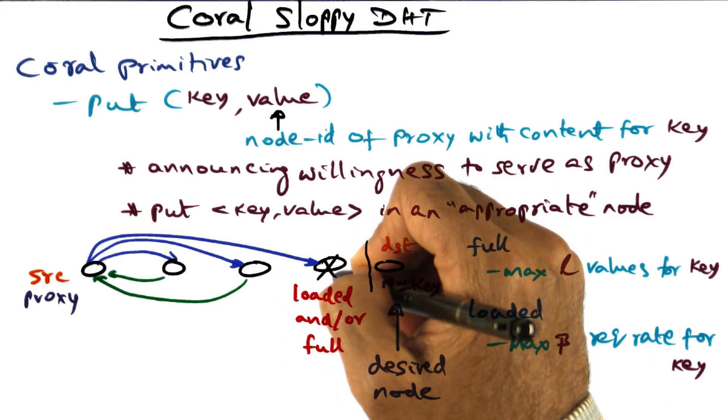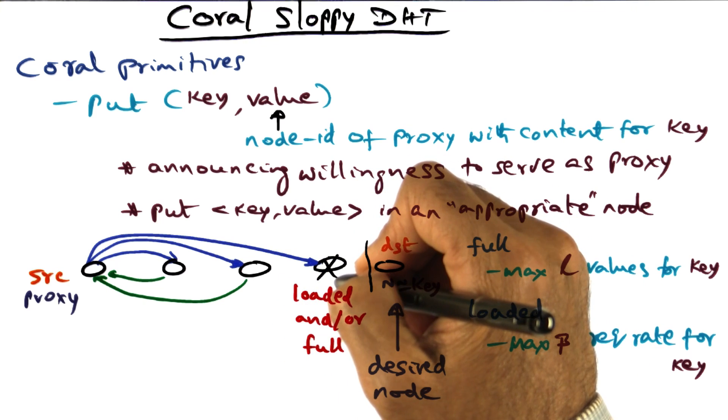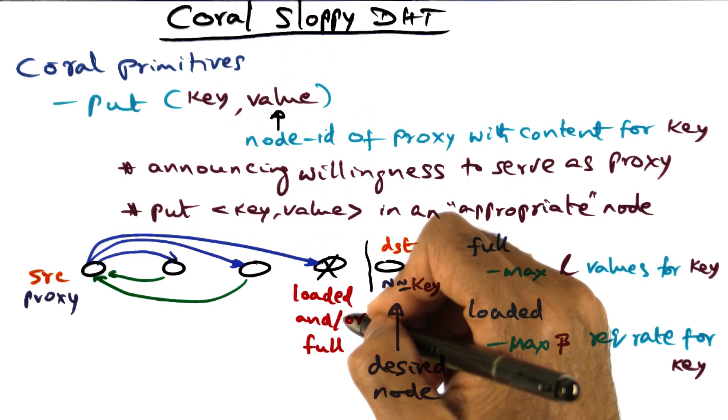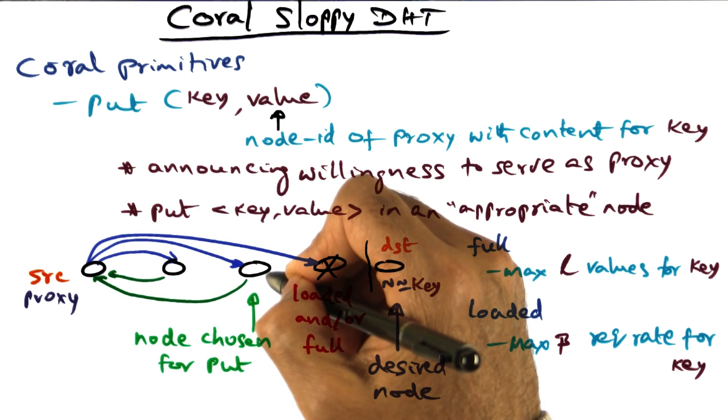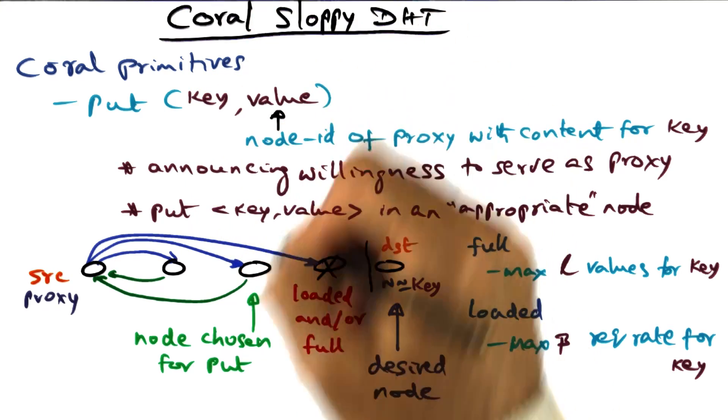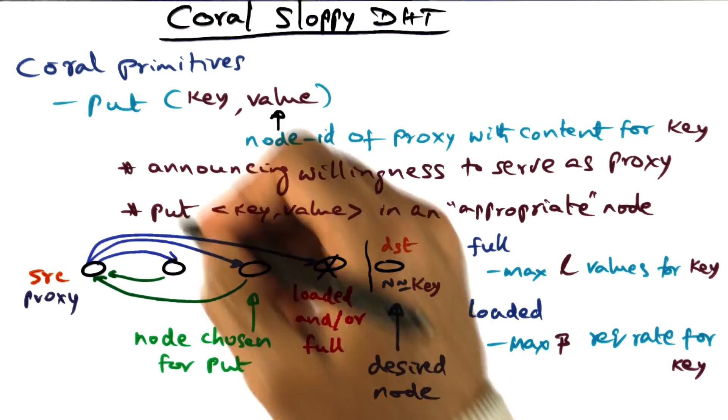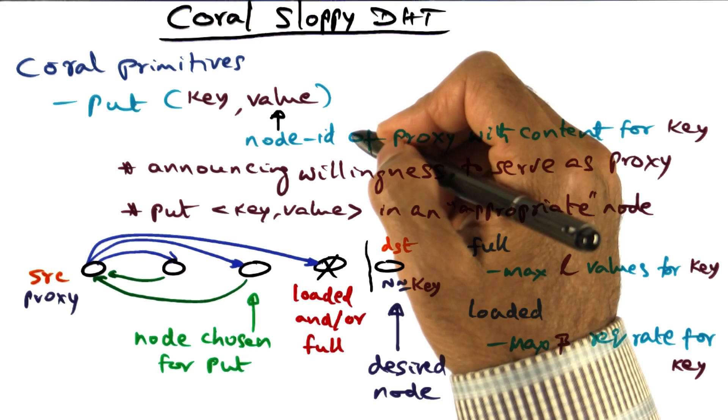And not even at this guy because he's also loaded and/or full for the same key. And so I'm going to retract my step and choose this node as the node to place the key-value pair. So in other words, when I do a put operation, there are two phases to it.